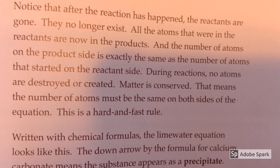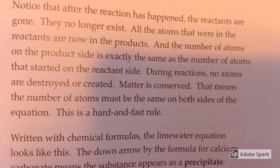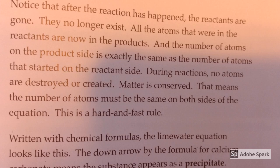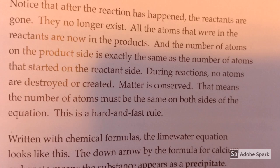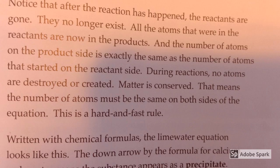Notice that after the reaction has happened, the reactants are gone — they no longer exist. All the atoms that were in the reactants are now in the products. The number of atoms on the product side is exactly the same as the number of atoms that started on the reactant side. During reactions, no atoms are destroyed or created. Matter is conserved — that means the number of atoms must be the same on both sides of the equation.